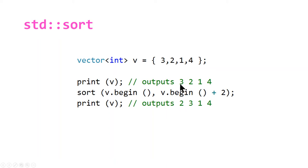So it's going to go from 3, 2, 1, 4 to outputting 2, 3, 1, 4. So you can do partial sorts of data structures or containers.